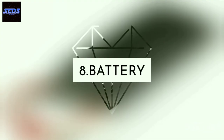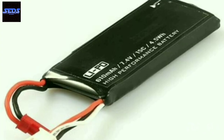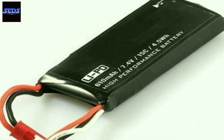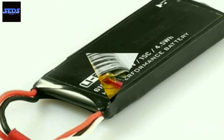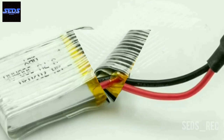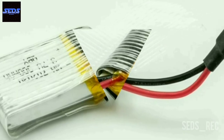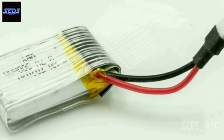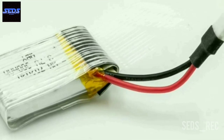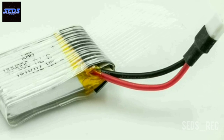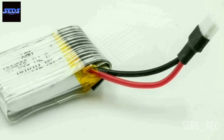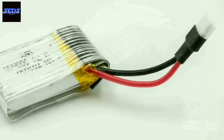Number eight, battery. The battery has a C rating and a power rating in milliampere-hours. The C rating indicates the rate at which power can be drawn from the battery, and the power rating describes how much power the battery can supply.